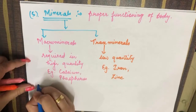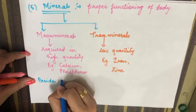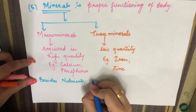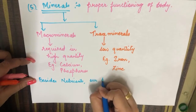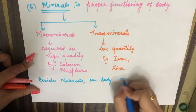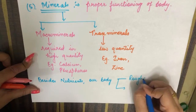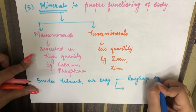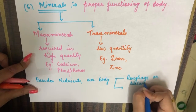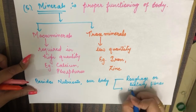Now, beside nutrients — which is all we have covered so far — our body requires two more items: roughage, also called dietary fibers, and water.